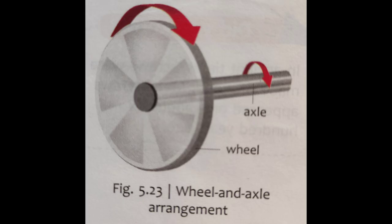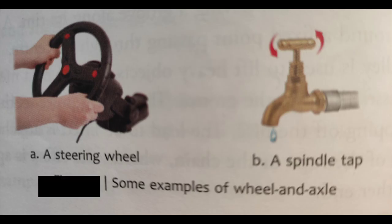Now we are talking about the wheel and axle. A wheel and axle arrangement consists of a wheel attached to a rod called an axle, such that when the wheel is made to rotate, the axle also rotates. Examples of wheel and axle that we come across in everyday life include a steering wheel and a spindle tap.